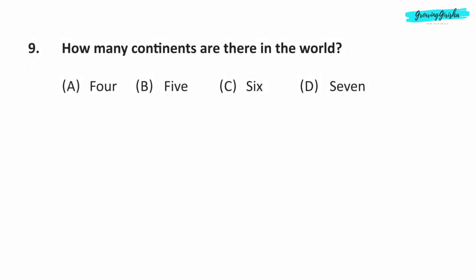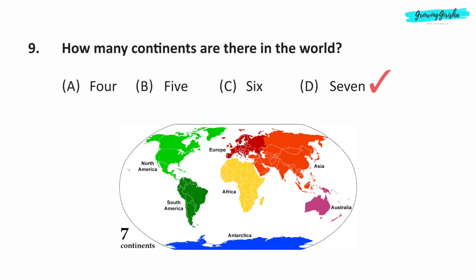Question 9. How many continents are there in the world? Option D: 7. These continents are Asia, Africa, Australia, North America, South America, Antarctica, and Europe.